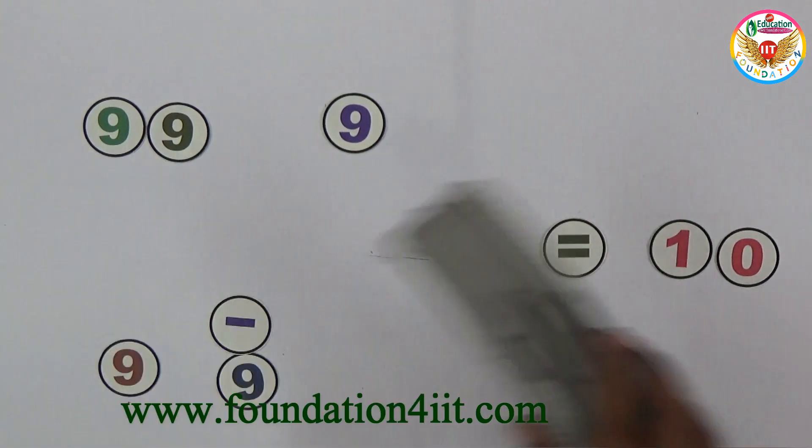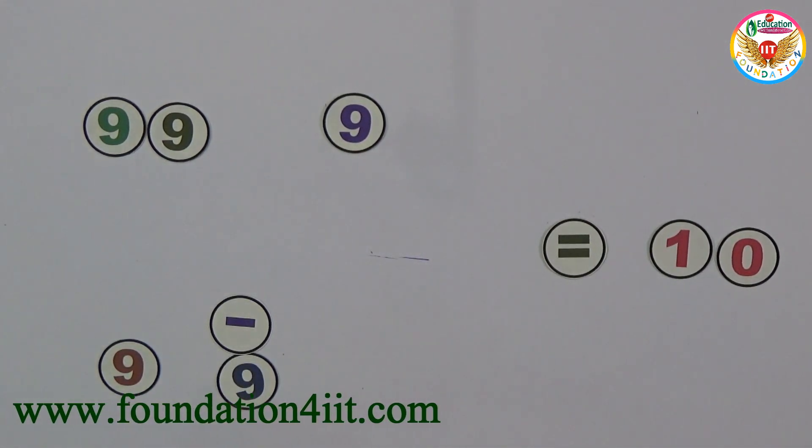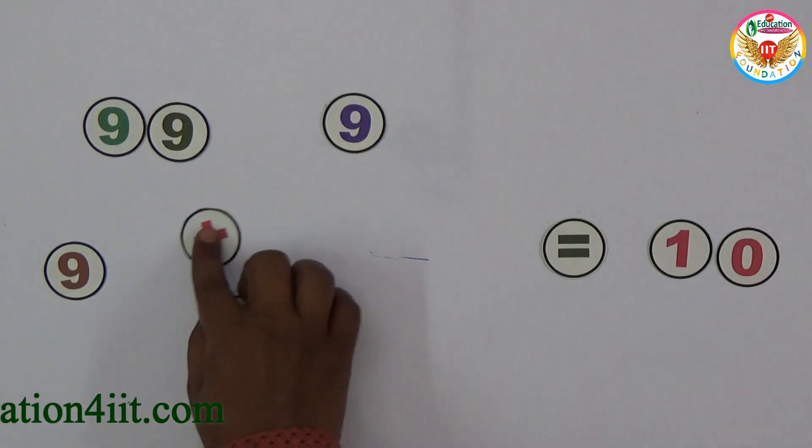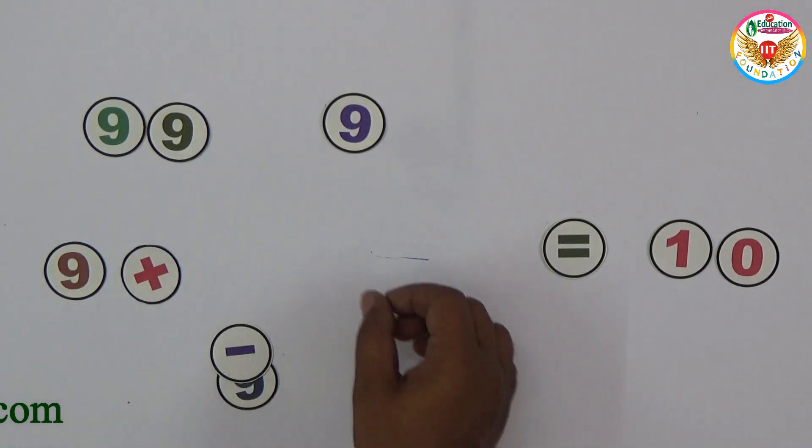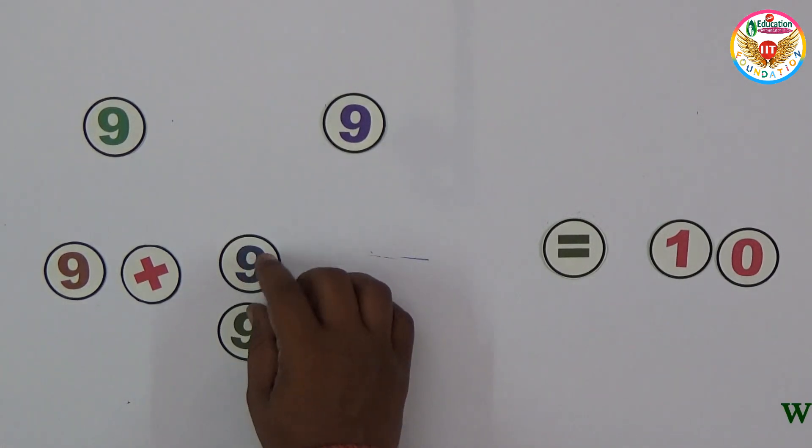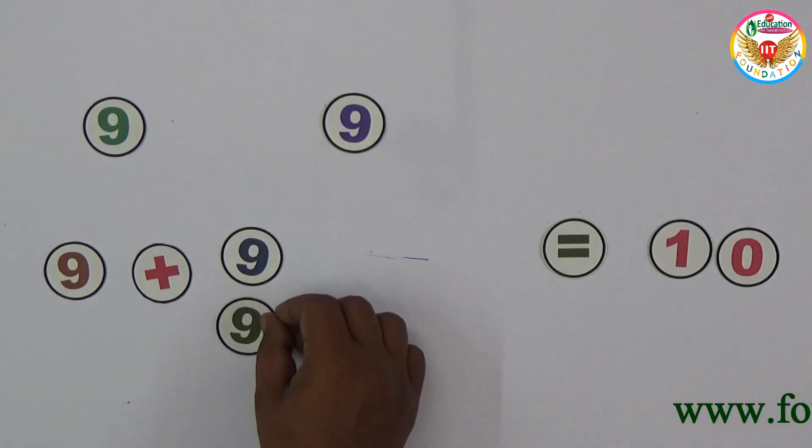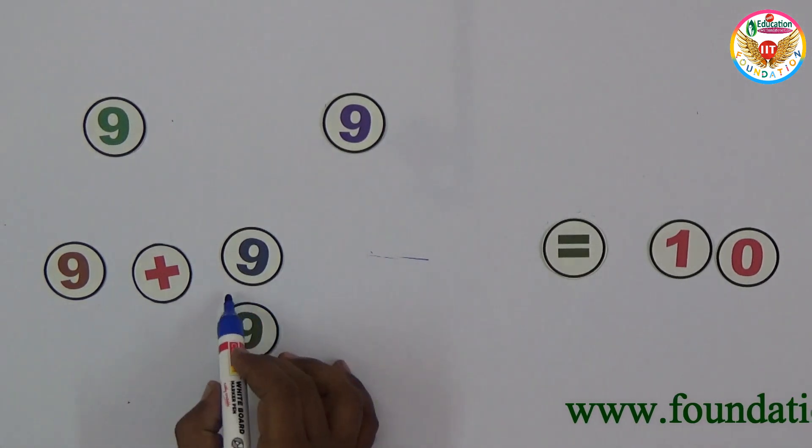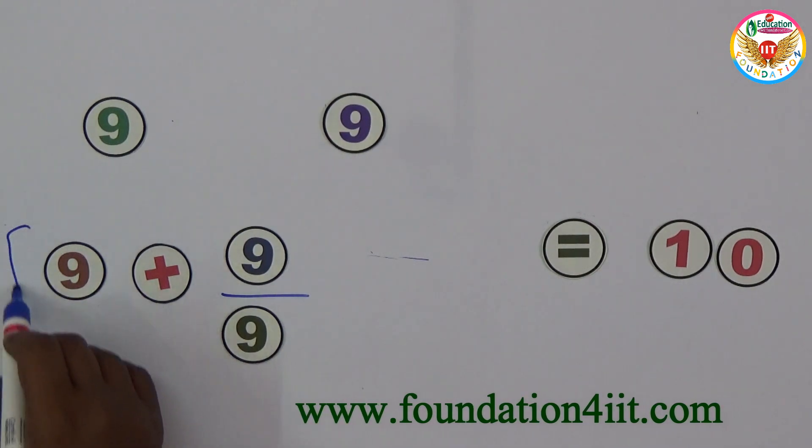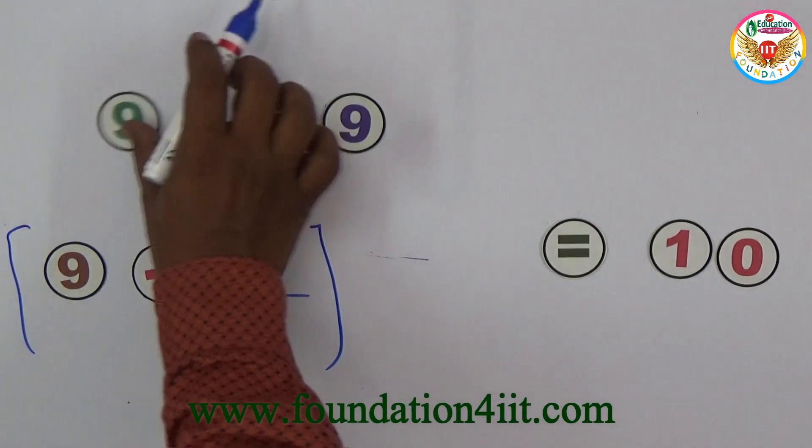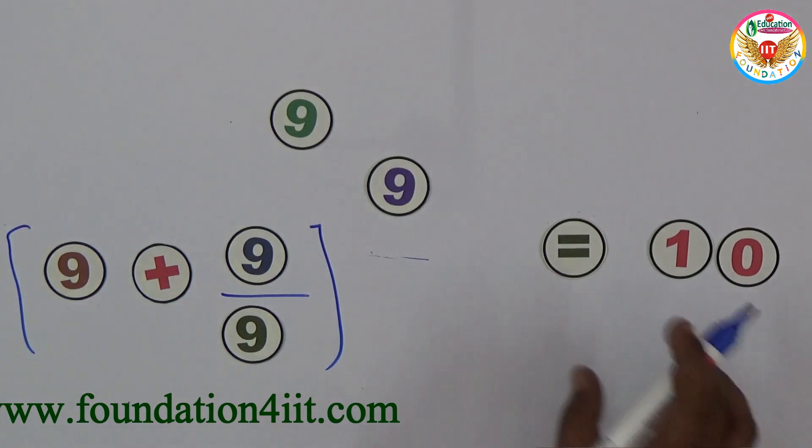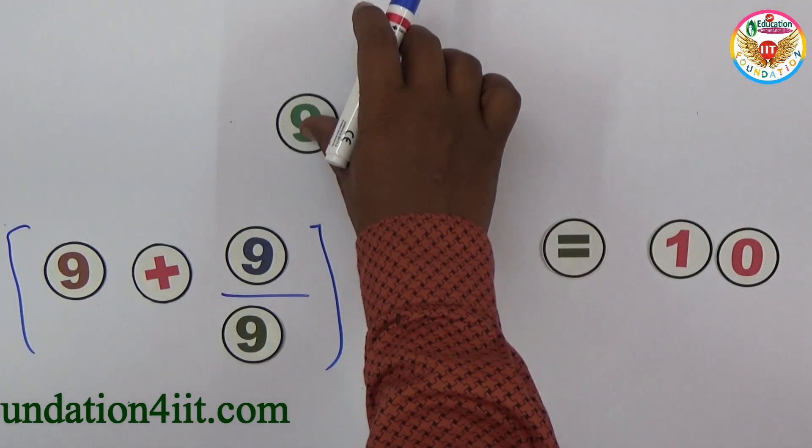One more solution to obtain 10 using five 9's: (9 + 9/9) to the power of 9/9. We know that 9 + 9/9 is 10, and 10 to the power 1 is 10. So 10 to the power (9/9) equals 10.